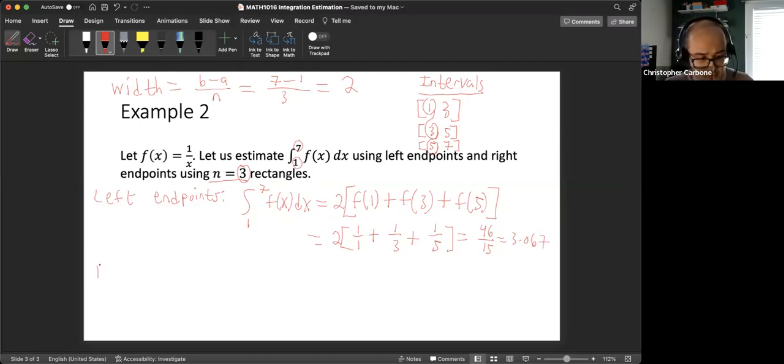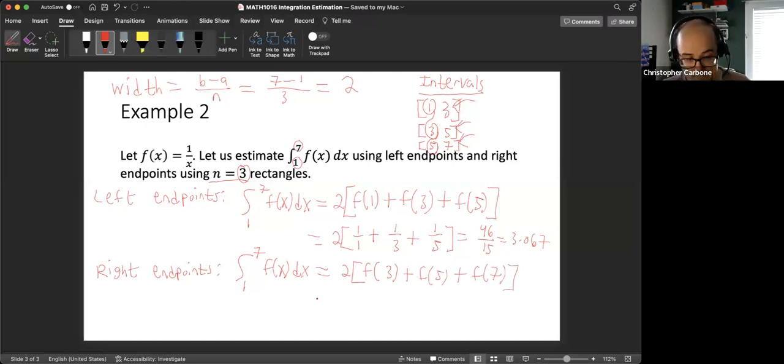The right endpoints, again, same width. Right endpoints. It uses that same width. So integral from 1 to 7 of f(x) dx. This best estimate will be 2 times. And now we would use the right-hand side of each of these intervals. So the value of the function at 3 this time, plus the value of the function at 5, plus the value of the function at 7. So 2 times you put 3 into a function, you get 1 third. You put 5 into the function, you get 1 fifth. And you put 7 into the function, you get 1 seventh.